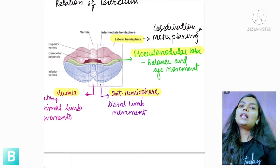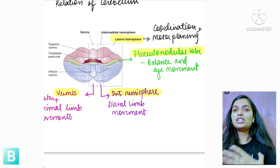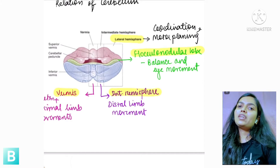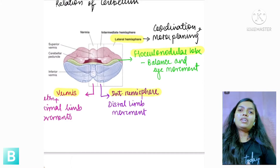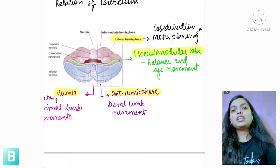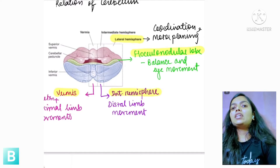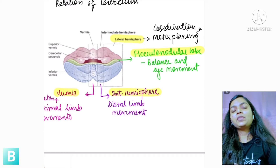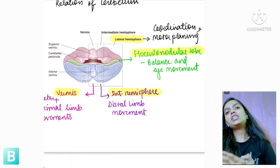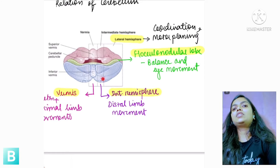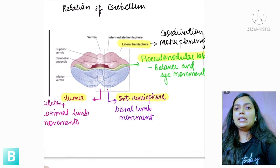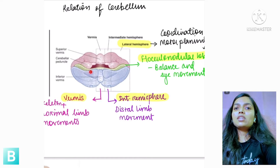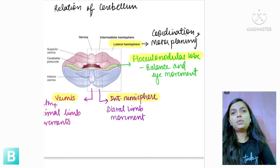The Cerebellum also helps you learn procedural movements. For example, if you are driving a two-wheeler, the first day you will be unaware how to drive it, but with each frequent session your body gives an update to the Cerebellum to learn it as a procedural movement, so you get better and better. One important structure here is the flocculonodular lobe, which helps with balance and eye movements.